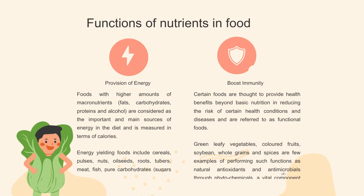There are several main functions of nutrients in food. The first function is provision of energy. Foods with higher amounts of macronutrients are considered the important and main sources of energy in the diet, measured in terms of calories. Energy-yielding foods include cereals, pulses, nuts, oilseeds, roots, tubers, meat, fish, pure carbohydrates and fats or oils.